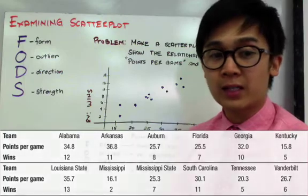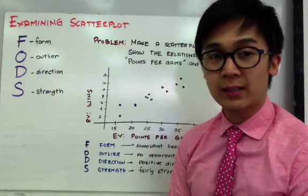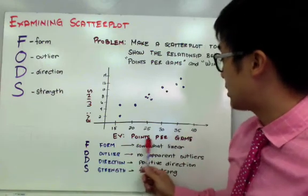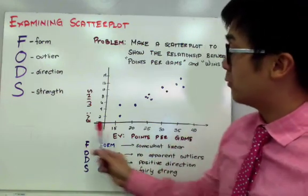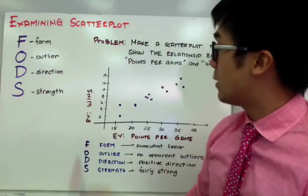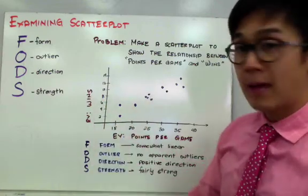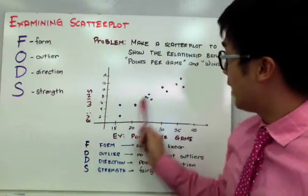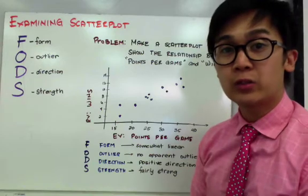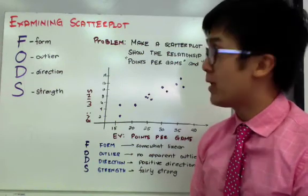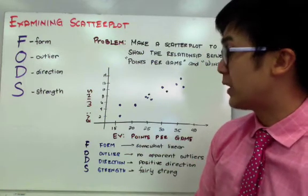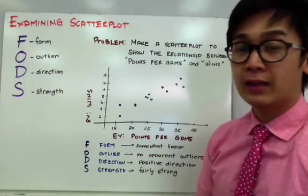If we're going to plot this particular data set in our scatterplot, our explanatory variable will be the points per game and the response variable here will be the number of wins. Now, in representing your scatterplot, we are seeing a pattern in our dots that you are seeing in my board right now. And just like what I've mentioned, we need to use our acronym to be able to interpret the complete interpretations or points that we need to mention when we are looking at a scatterplot.